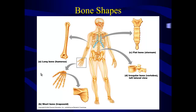Short bones are bones where their two axes are more or less the same length — not exactly cube-like, but roughly equal. Good examples of long bones include the long bones in your limbs: the humerus, radius, and ulna in your arms, your femur, tibia, and fibula in your legs. Examples of short bones include your carpal bones — your wrist bones — which are basically the same length as they are wide.